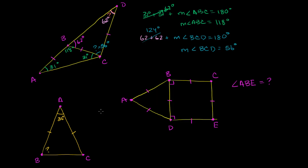Let's do this one right over here. What is the measure of angle ABE? They haven't drawn segment BE, so let me draw that. We have a bunch of congruent segments, and triangle ABD has all its sides equal — it's an equilateral triangle, which means all of the angles are equal. If all angles are equal in a triangle, they all have to be 60 degrees.